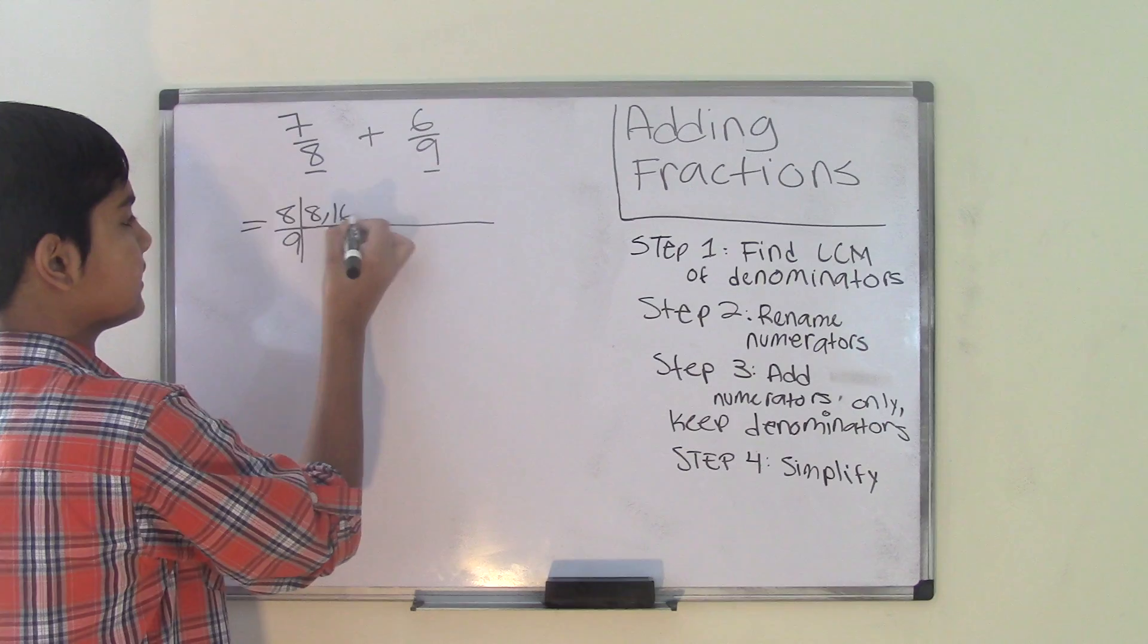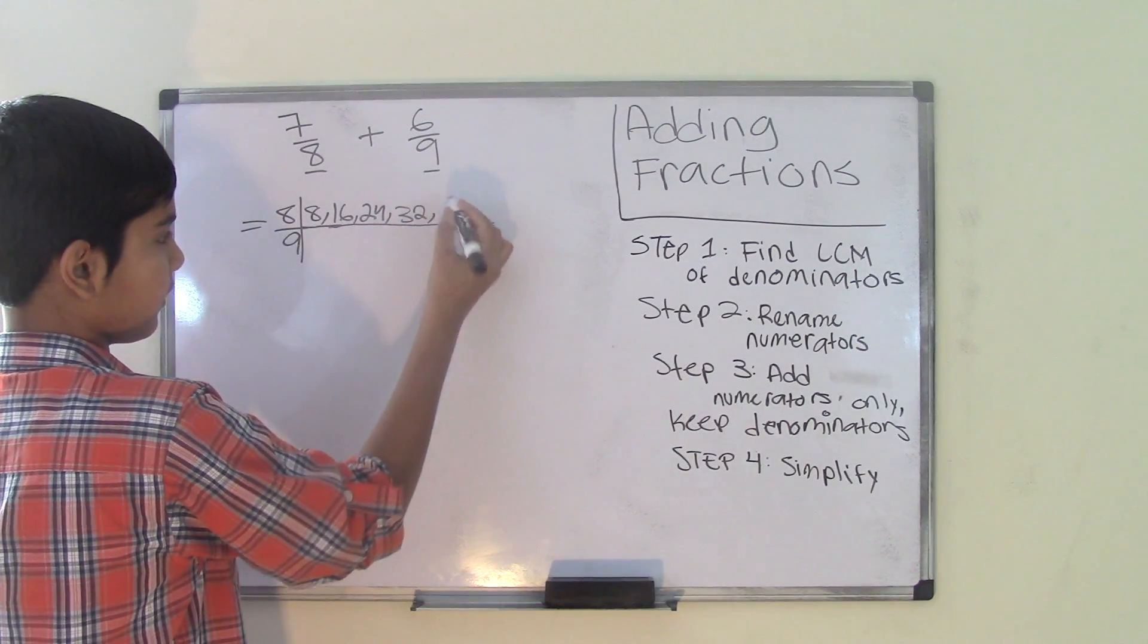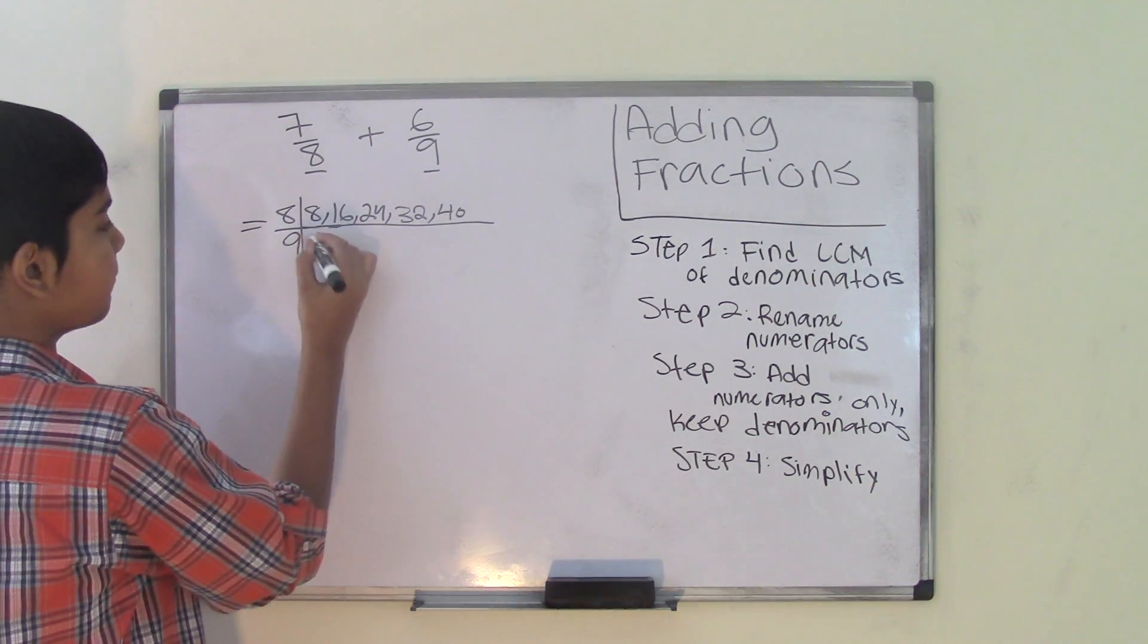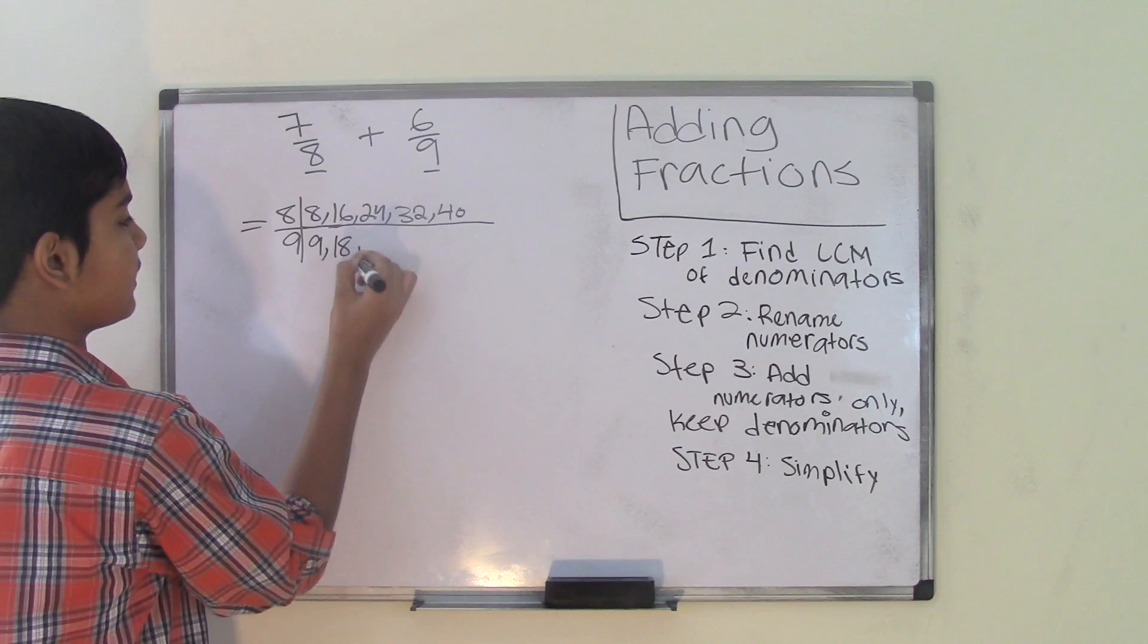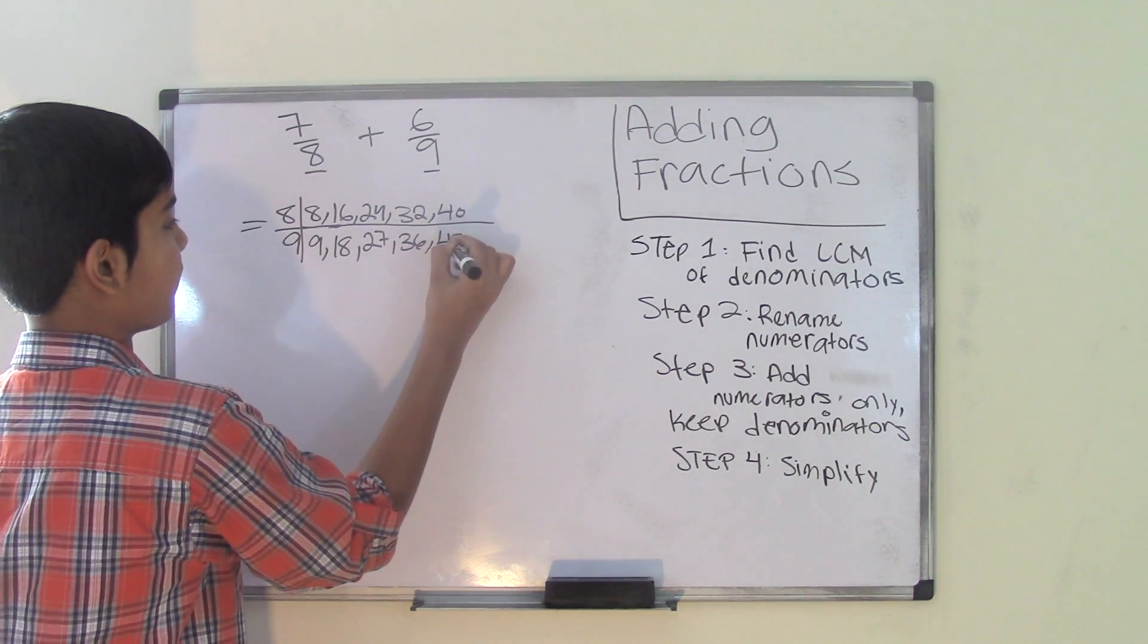Some multiples for the number 8 would be 8, 16, 24, 32, and 40. Some multiples for the number 9 would be 9, 18, 27, 36, and 45.